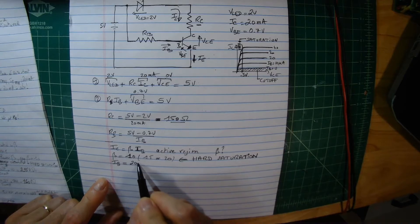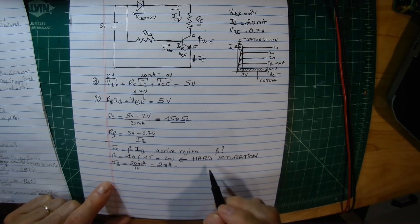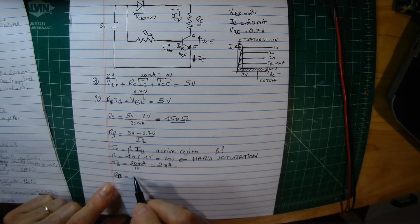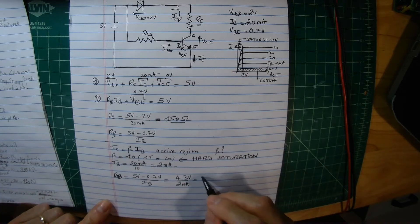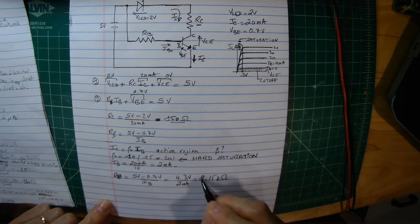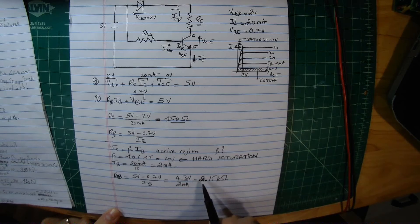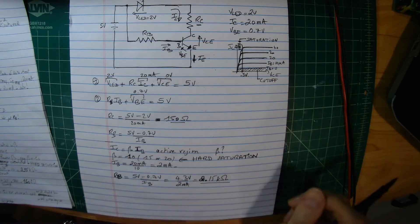Using β = 10, Ib equals 20 milliamps divided by 10, which gives 2 milliamps. Now we can compute Rb: Rb = (5V − 0.7V) / 2mA = 4.3V / 2mA = 2.15 kilohms. If you were to use the true beta (which is probably 100 or 200), Rb would be a much larger value, but we use 2.15 kΩ.